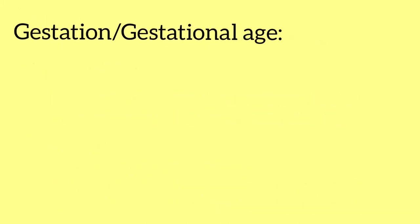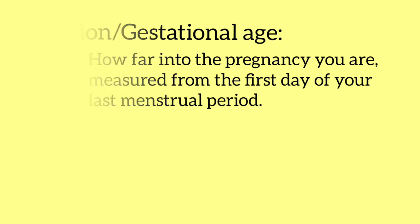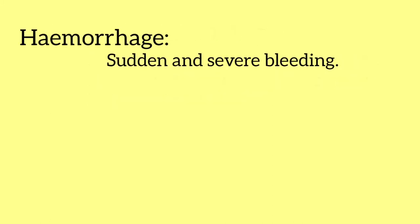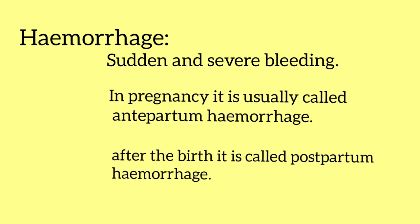Gestational age is how far into pregnancy you are, measured from the first day of your last menstrual period. Hemorrhage means sudden and severe bleeding; in pregnancy it is usually called antepartum hemorrhage, and after the birth it is called postpartum hemorrhage.